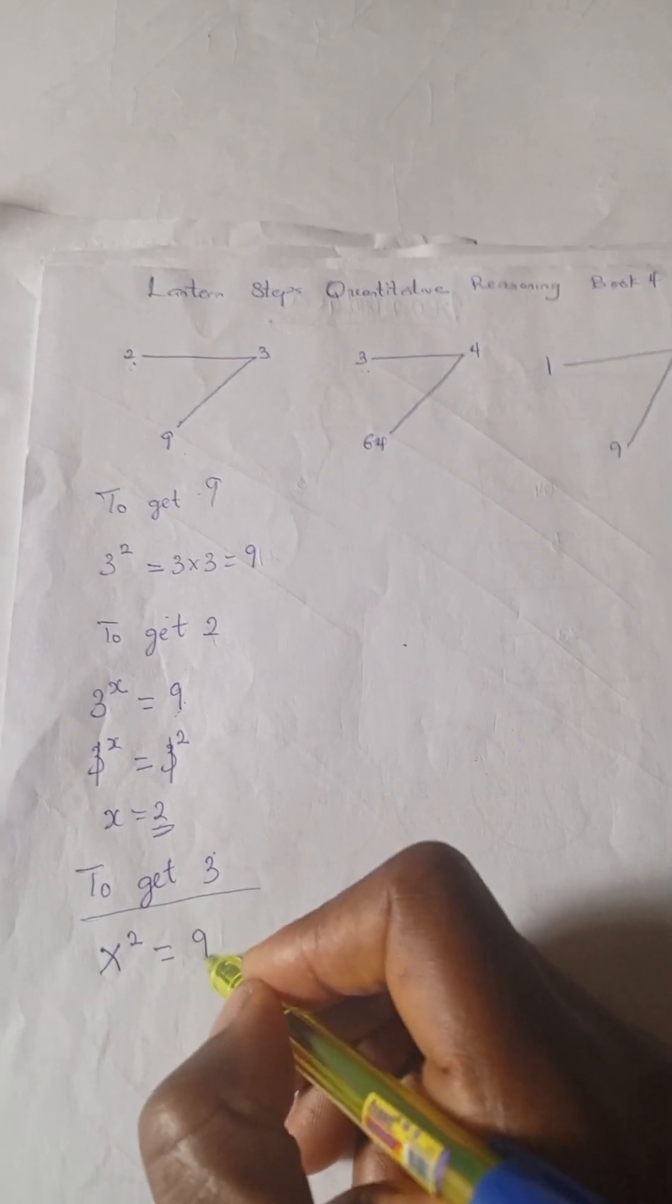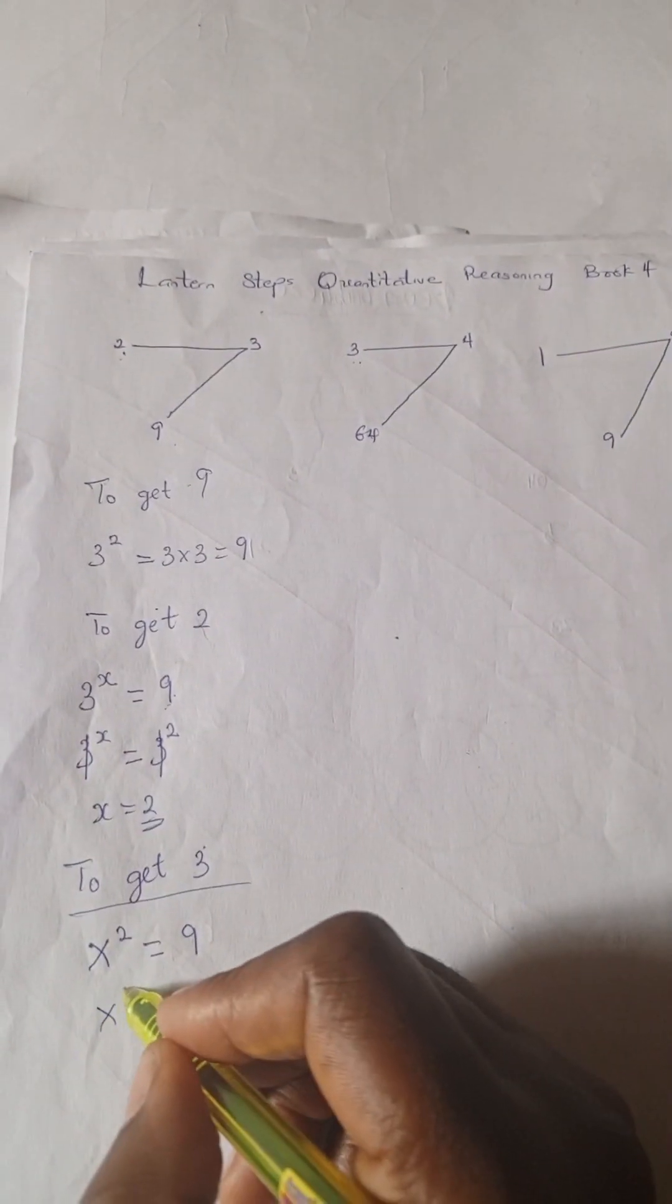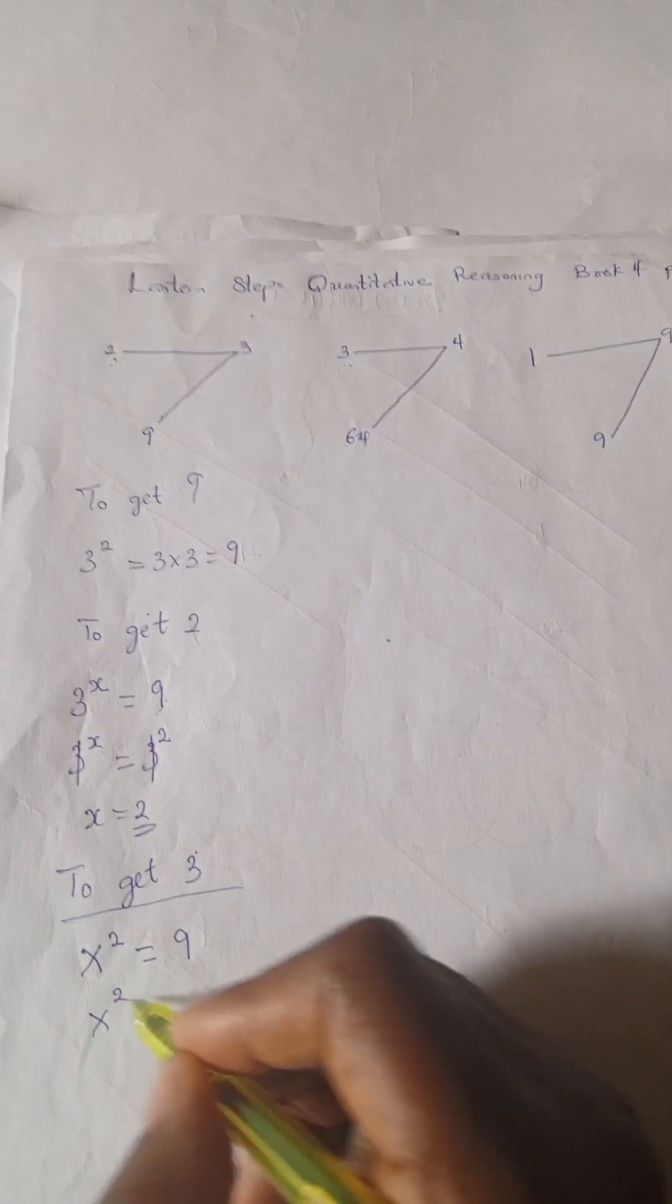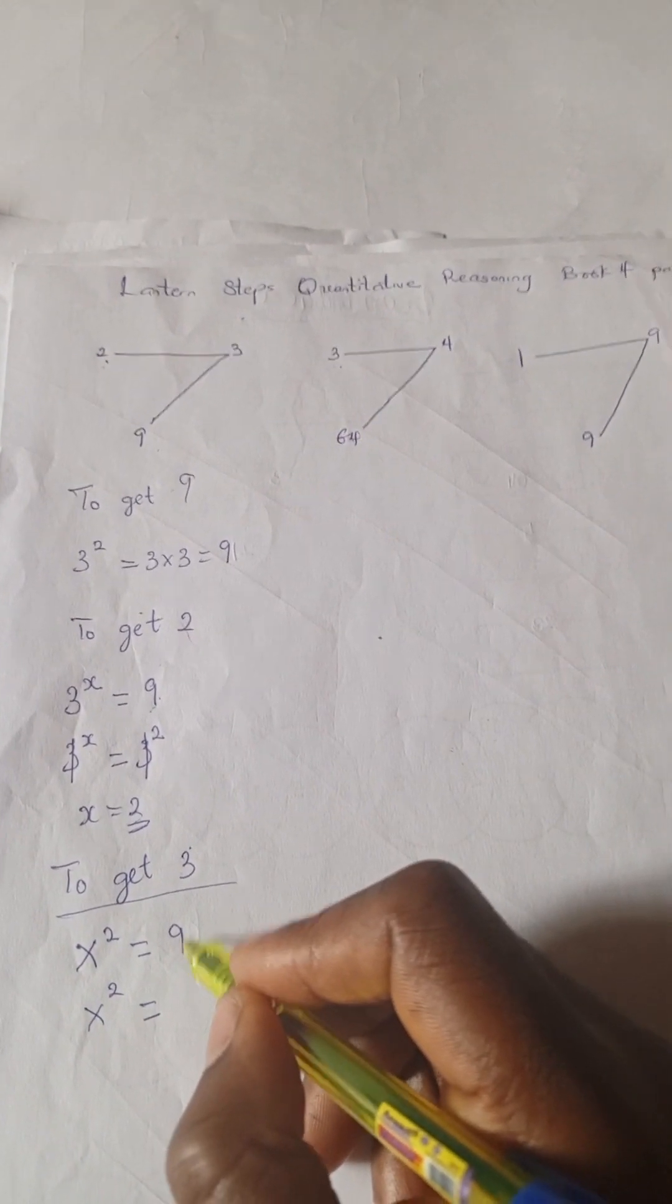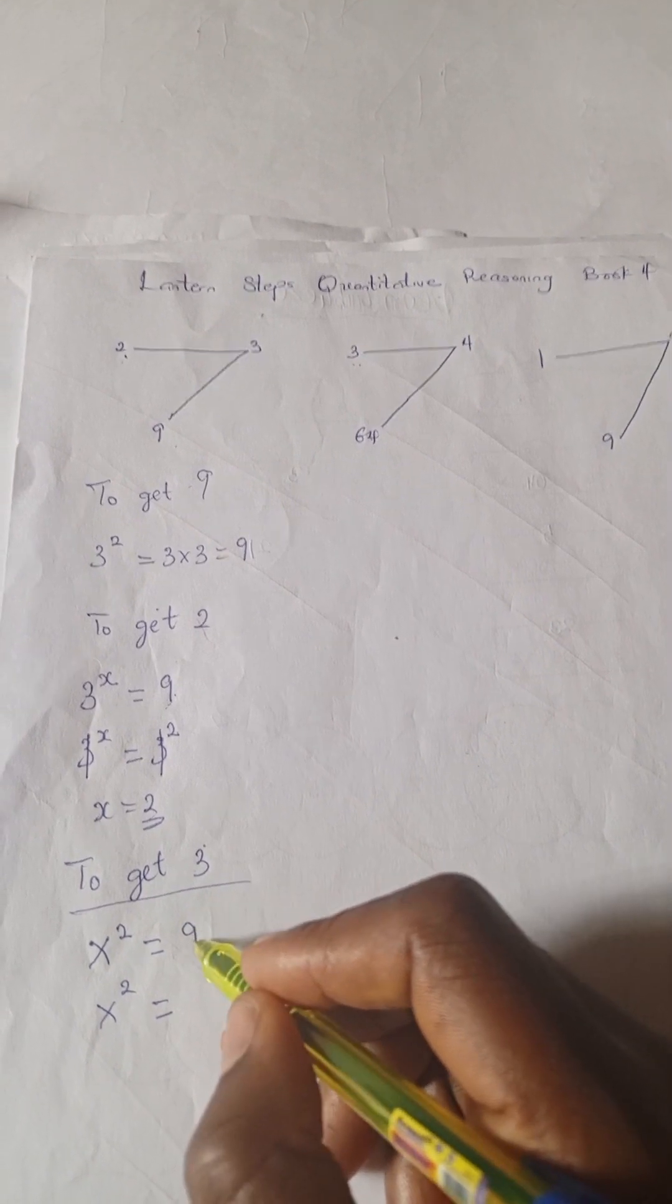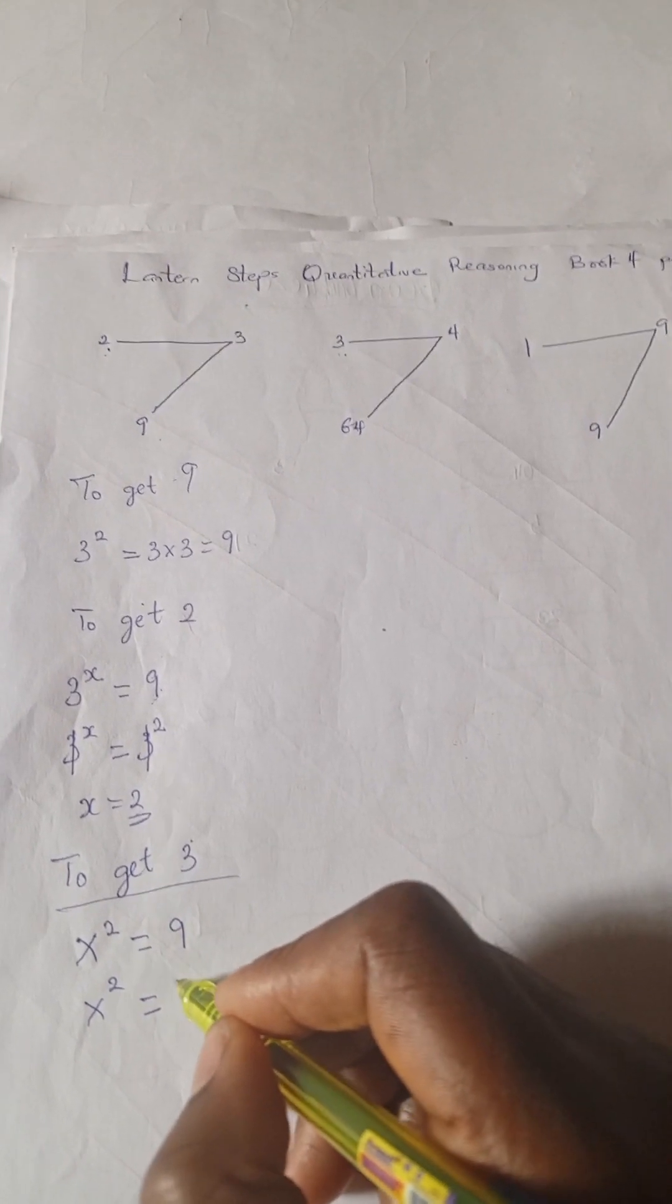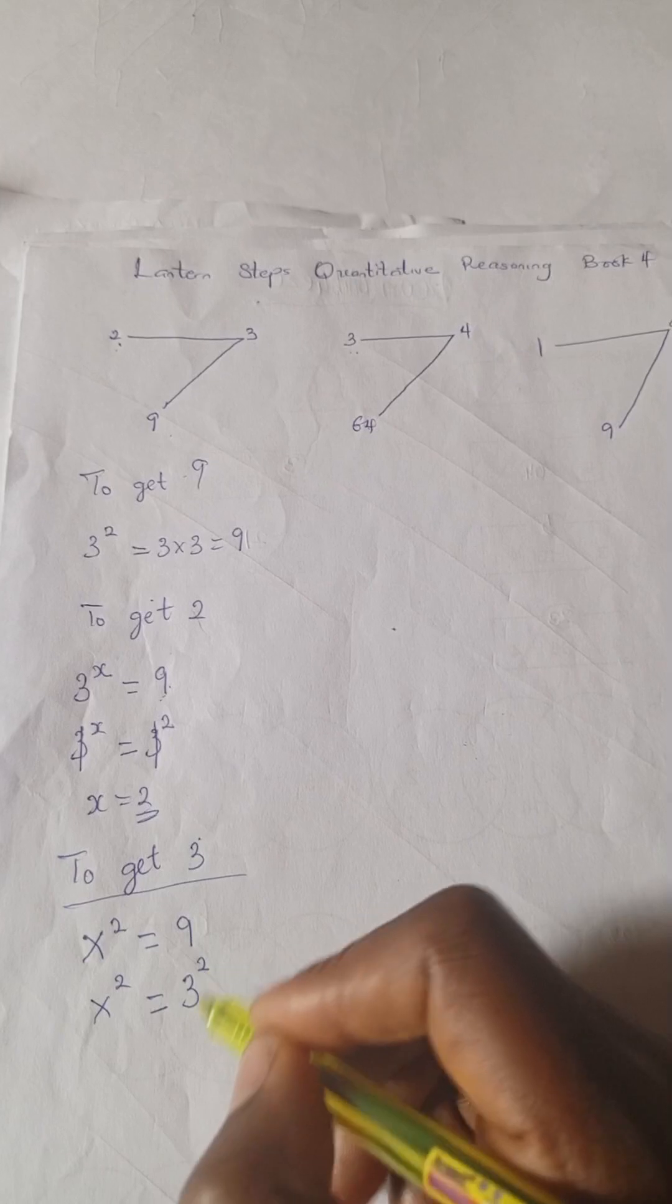x to the power of 2 which is already available equals 9. So our x which is unknown to the power of 2 equals, let's take this to, let's give this a power of 2 and it's going to be 3 to the power of 2.